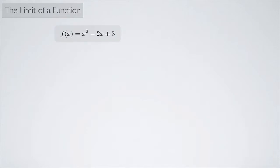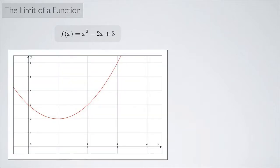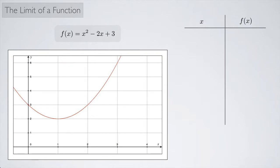Let's look at f(x) = x² - 2x + 3. This is a parabola. And let's look at what happens as we let x approach the value 2. I'm going to make a chart with values of x and values of f(x), and we're going to let the values of x get closer and closer to 2.